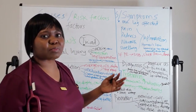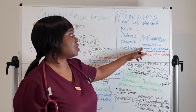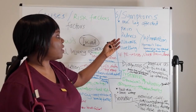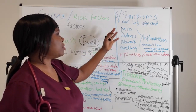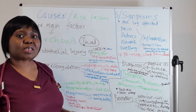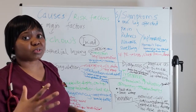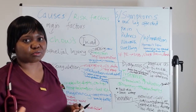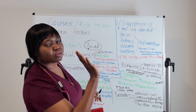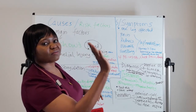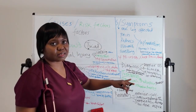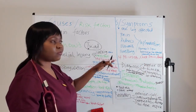For NCLEX and nursing school exams, you need to know Homan's sign. It is a bedside test for DVT. Have the patient lie flat and dorsiflex the affected leg — flexing the foot toward the shin. Because the patient is already in pain, you may need to perform the dorsiflexion for them. If the patient feels pain upon dorsiflexion, that confirms a positive Homan's sign.